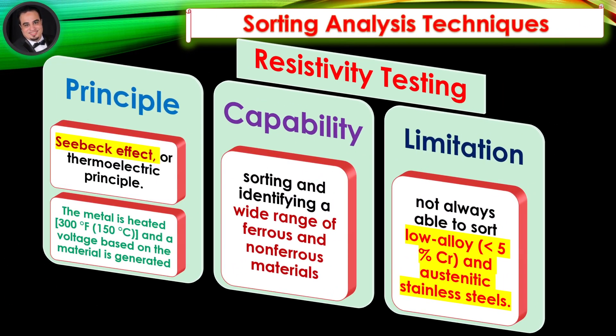Sorting Analysis Techniques: Resistivity Testing. The principle employed in resistivity testing is known as the Seebeck effect, or thermoelectric principle. The metal is heated to 300 degrees Fahrenheit and a voltage based on the material is generated. Every alloy of a given crystalline structure will generate the same voltage regardless of the geometry, size of the piece being tested, or the pressure applied. By reference to known standards, these instruments are capable of sorting and identifying a wide range of ferrous and non-ferrous materials.